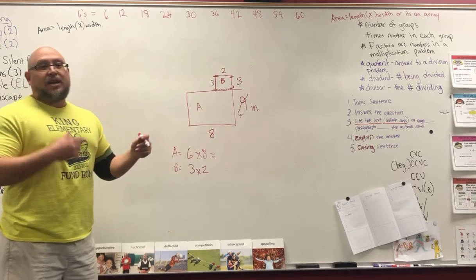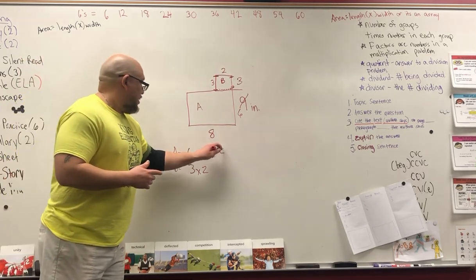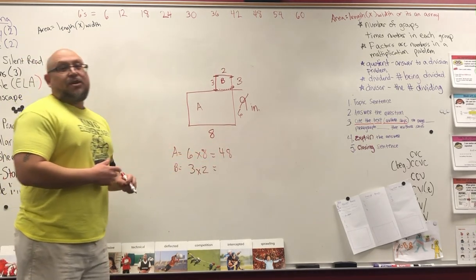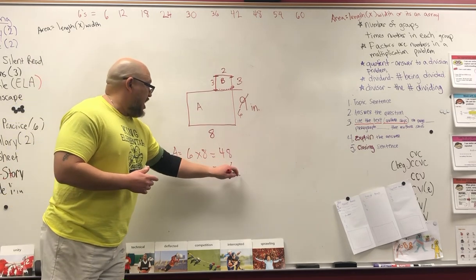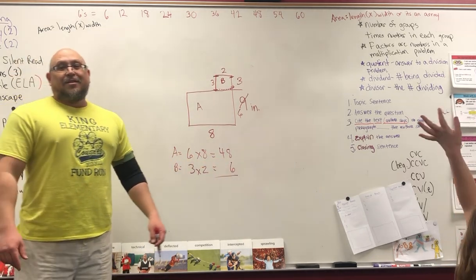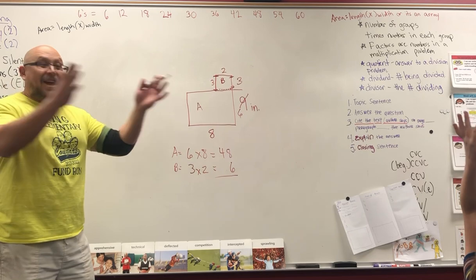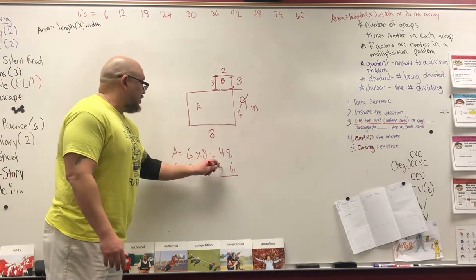Six times eight equals 48. Three times two equals six. Am I done? No, you gotta add them back together because I broke them apart.